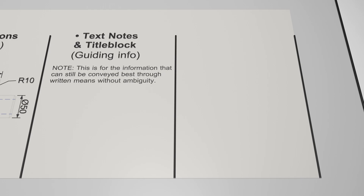The next category of information features two similar aspects that reserve the ability for the drafter to identify information that is still best served in a written format or can be represented with less repetition than a graphical alternative. An example of this would be for curved corners, also known as fillets. If many corners on an object share the exact same filleting requirements, it can be tidier to simply state that all fillets are two millimeters unless otherwise stated, rather than having R2 dimensions all around the drawing.